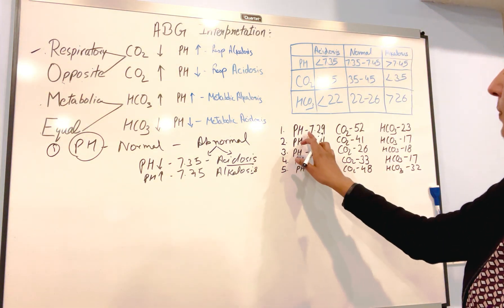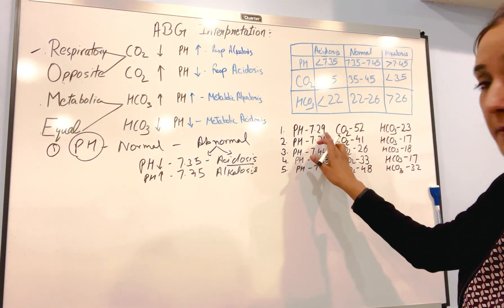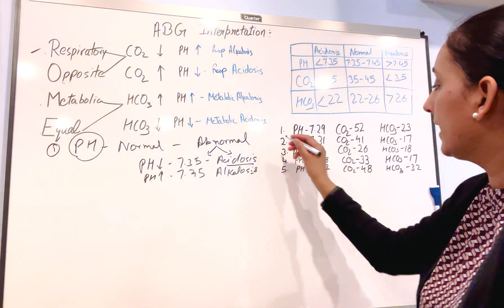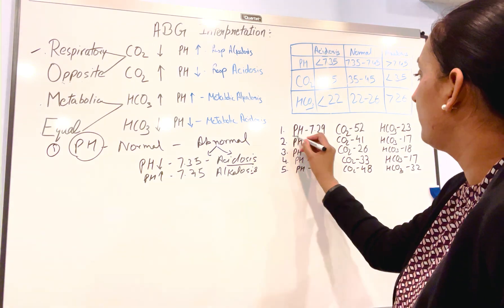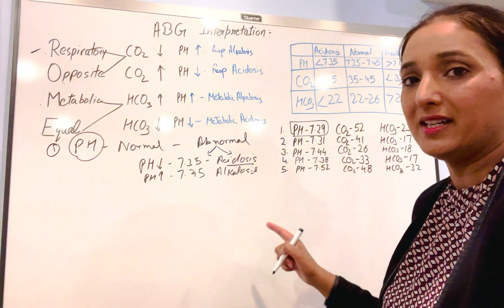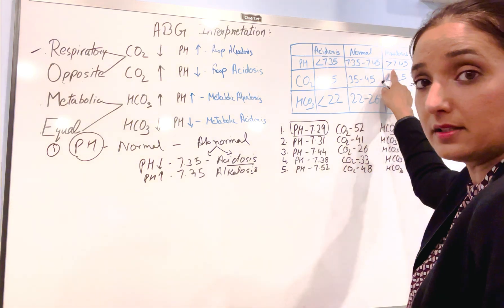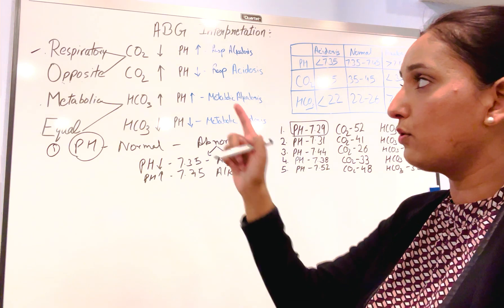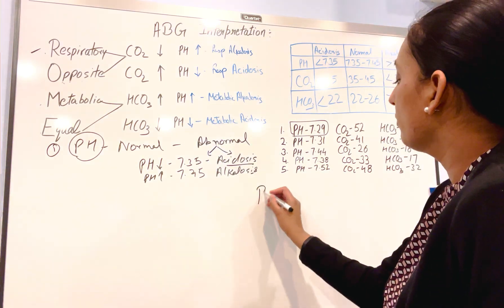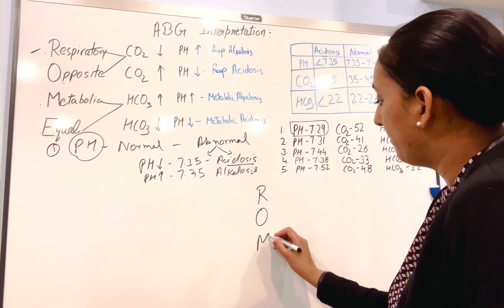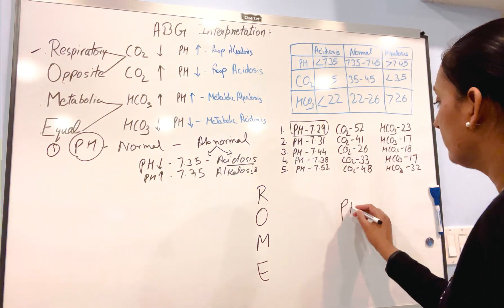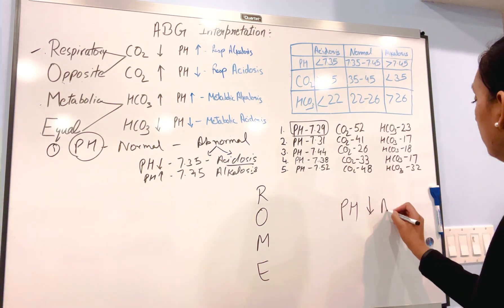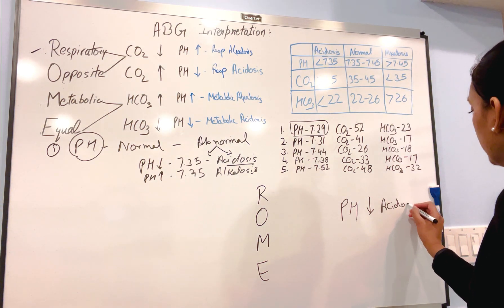Let's use one example. First example: pH 7.29, carbon dioxide 52, bicarb 23. First question — pH is 7.29. Is it alkalosis or acidosis? It's below 7.35, so that means it is acidosis. Now how are we going to use the ROME method? Write R-O-M-E. pH is going down, so that means acidosis.